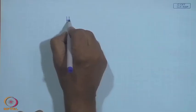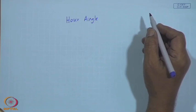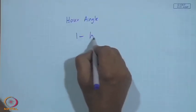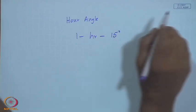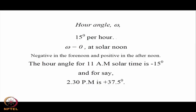We also define the hour angle omega. Instead of saying 10 o'clock, 11 o'clock, we specify by the hour angle omega. Since 24 hours corresponds to 360 degrees of rotation, each 1 hour corresponds to 15 degrees. By convention, omega = 0 at solar noon, negative in the forenoon, and positive in the afternoon. For example, 11 AM solar time is −15 degrees, and 2:30 PM is +37.5 degrees.